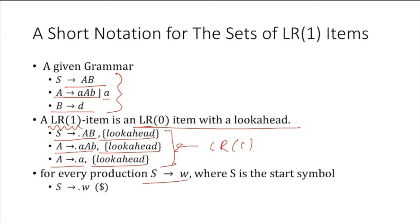For every production S → w where S is the start symbol, we have to add the dollar mark as lookahead for this production rule, because this production rule is always going to be followed by dollar, as S is the start symbol.